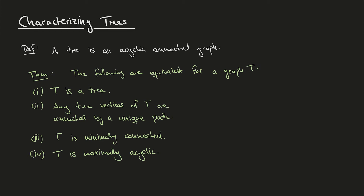The third point talks only about connectivity, but includes a minimality condition: T is connected, but if we remove any edge it's no longer connected. This minimality corresponds to T being acyclic. The fourth point is the opposite — it's about acyclicity with a maximality aspect. If T is maximally acyclic, adding any edge makes it cyclic, which implies connectivity. There's a trade-off between connectivity and acyclicity, and trees are exactly at the balancing point of this trade-off.